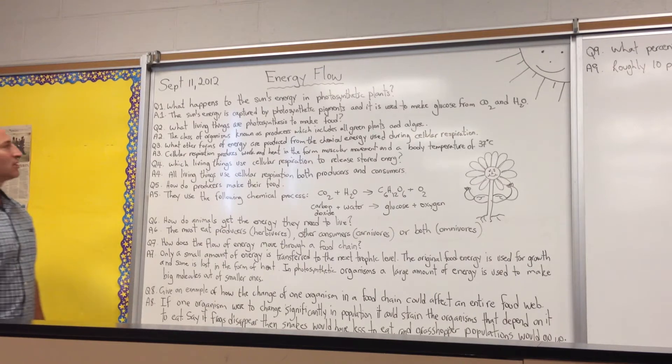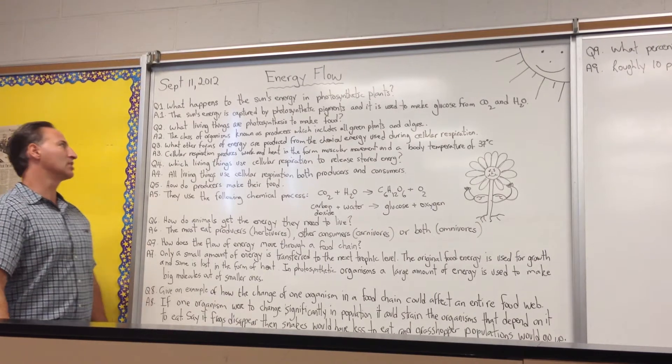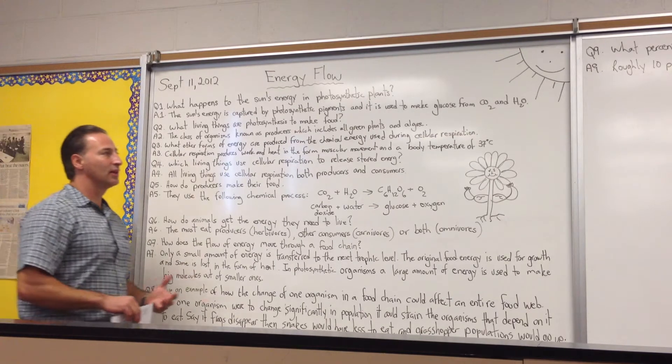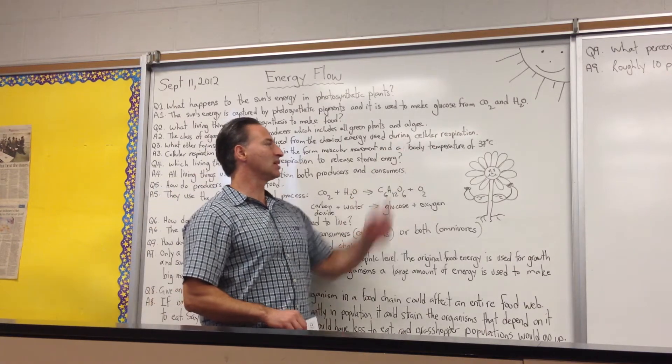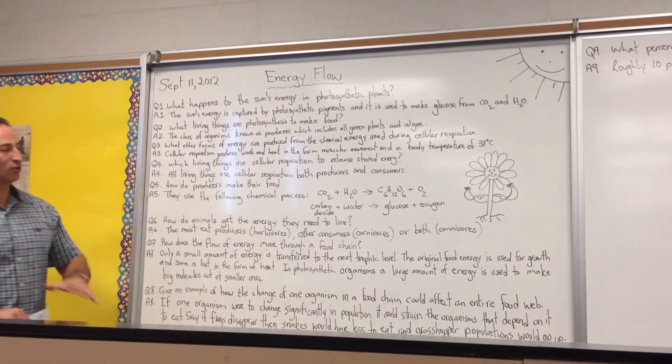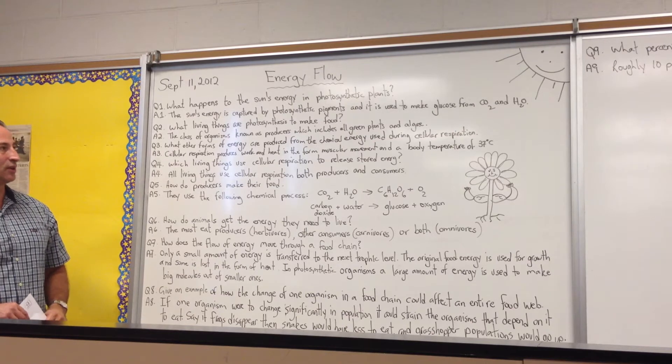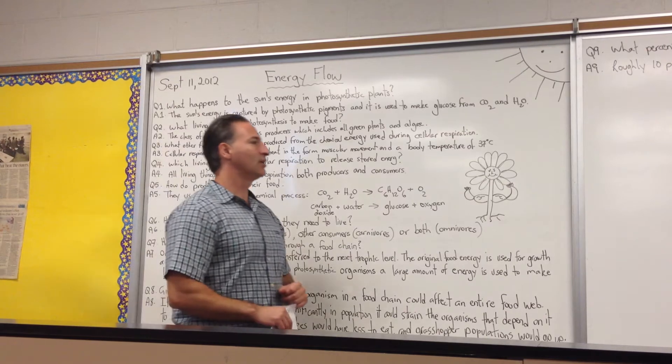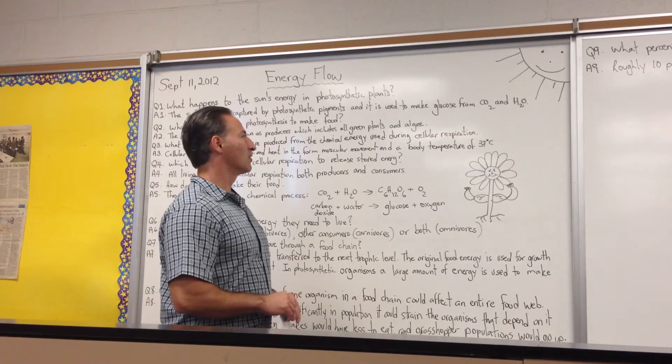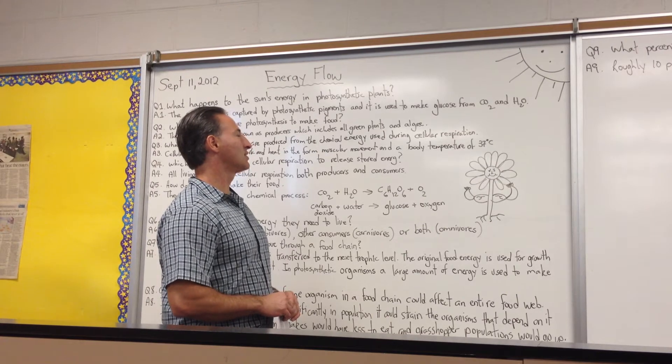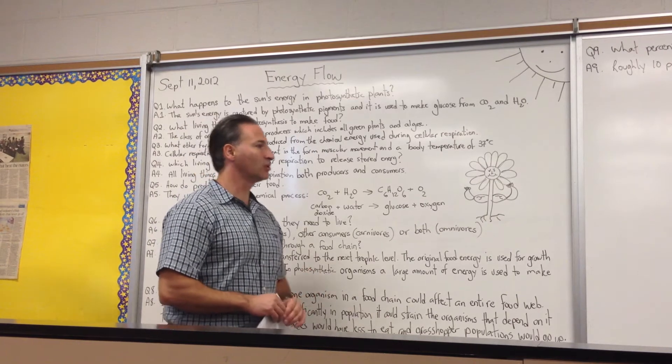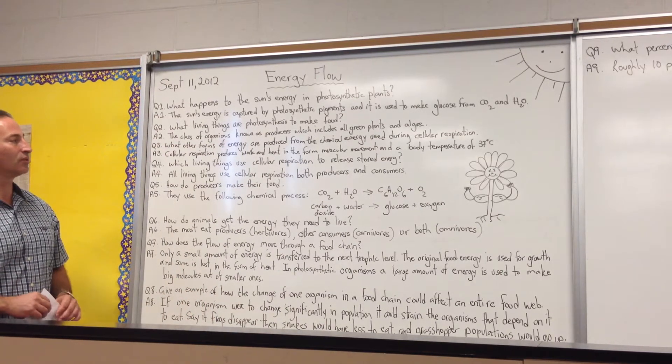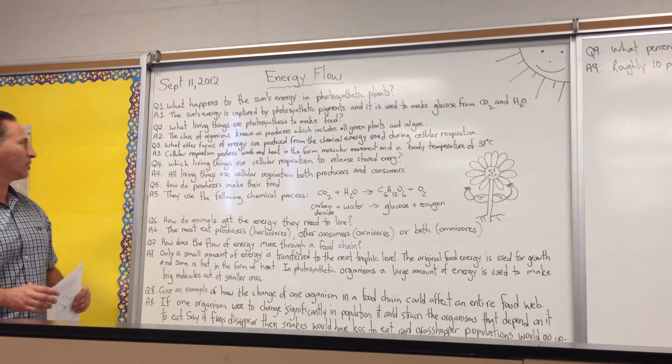The second question is, what living things use photosynthesis to make foods? The class of organisms known as producers, which includes all green plants and algae. Algae are little one-celled organisms that can grow in the water. When the surface of water turns green, it's due to algae. Algae are producers because they capture carbon dioxide from the air and they turn it into their cells. Also, the plants. Any plant that has chlorophyll, a green plant, is able to capture sunlight energy and turn it into growth.